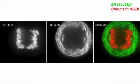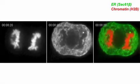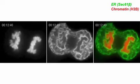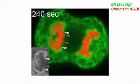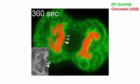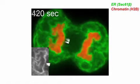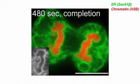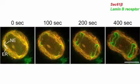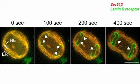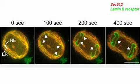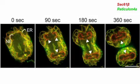Lu and Kirchhausen therefore re-examined nuclear envelope reassembly in HeLa cells expressing fluorescent markers of the ER and chromatin. The researchers found that during anaphase, ER sheets initially contact the rims of the dish-shaped chromosome masses moving to opposite spindle poles, before extending to fully enclose the daughter cell nuclei. The ER membranes contacting the chromosome masses rapidly accumulated resident nuclear envelope proteins such as the lamin B receptor, and excluded ER-specific proteins like reticulum 4A.